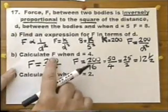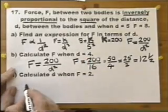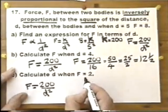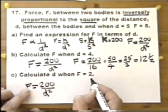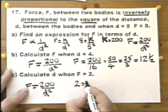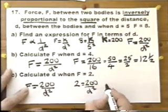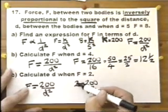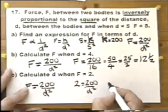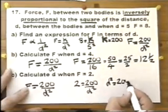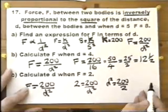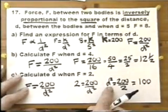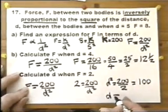Now for part C, we need to find D when F equals 2. Using the formula we found, we put F equals 2. The best way to handle this is to swap the positions of the 2 and the D squared — cross-multiplying gives D squared equals 200 over 2, which cancels to 100. If D squared equals 100, then D is the square root of 100, which is 10.